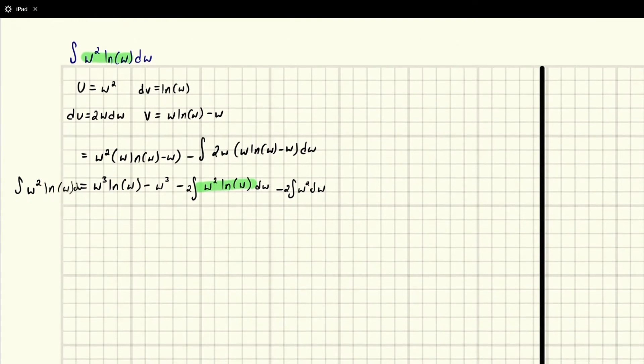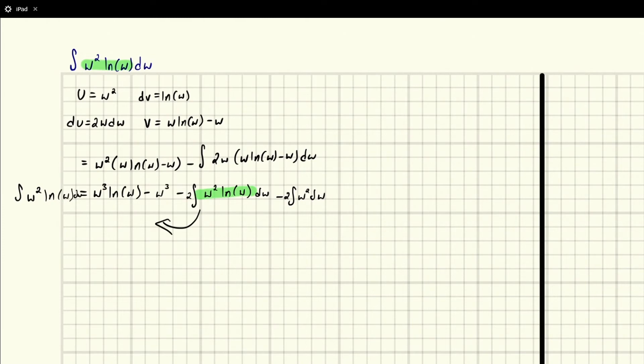So we can actually move this over to the other side. If we do that, if we add 2 integral w squared ln w dw to the other side, right, we're going to add that over here, all that stuff, we're going to have three of them. We're going to have 3 w squared ln, or I mean w. I knew I was going to slip up eventually.